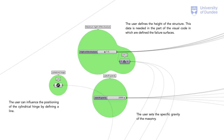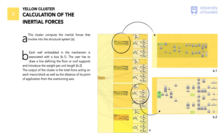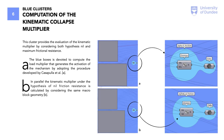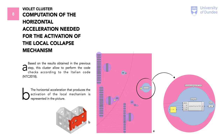At this step, the user can set the maximum height of the structure and the specific gravity of the masonry. In the fourth green cluster, the user can modify the value of the friction coefficient, and the visual code evaluates the friction resistance on each side wall. The fifth cluster calculates the inertial forces; each wall embedded in the mechanism is associated with a yellow box. The sixth blue cluster provides the evaluation of the kinematic multiplier by considering both hypotheses — nil and maximal frictional resistance — and the script finds the solution of the constrained optimization problem by using a genetic algorithm. The final cluster calculates the horizontal acceleration needed for the activation of the local collapse mechanism.